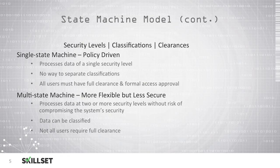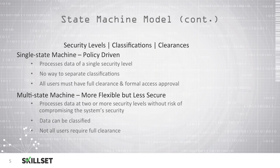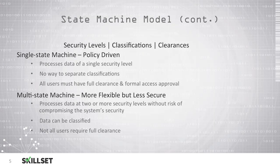We also have multi-state machines. These are less secure than single state machines, but they're more flexible. With a multi-state machine, we're processing data at two or more levels without the risk of compromising the system's security. The data can be classified or unclassified, and not all users are required to have the full clearance. For example, you could have a system that processes secret data as well as unclassified data. Only those users with a secret clearance would be able to access secret data, but any user would be able to access the unclassified data.